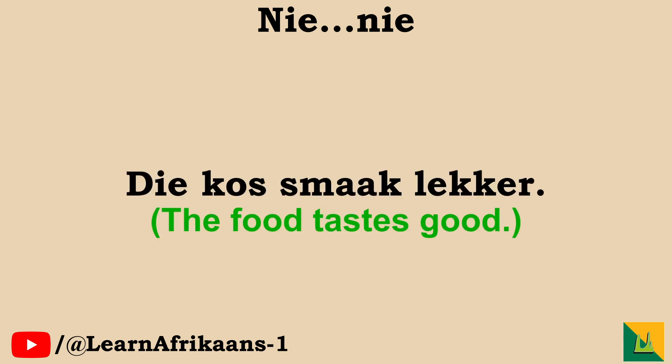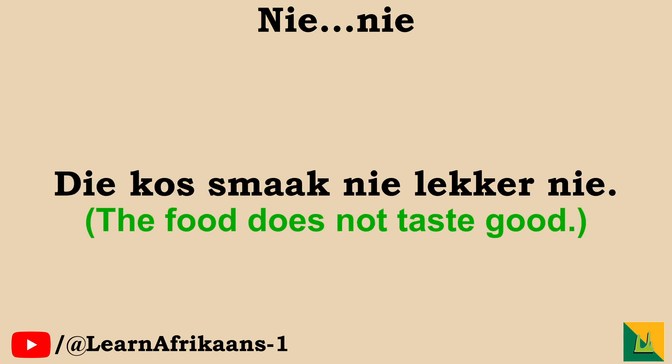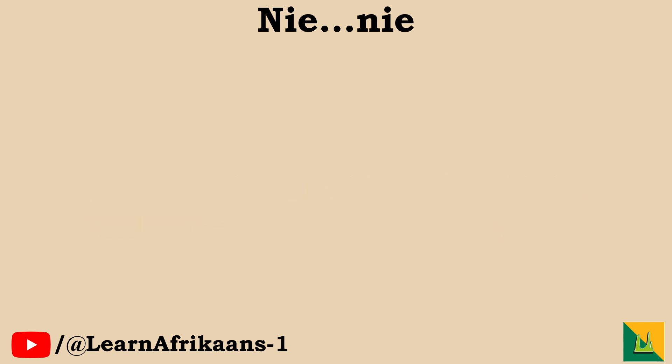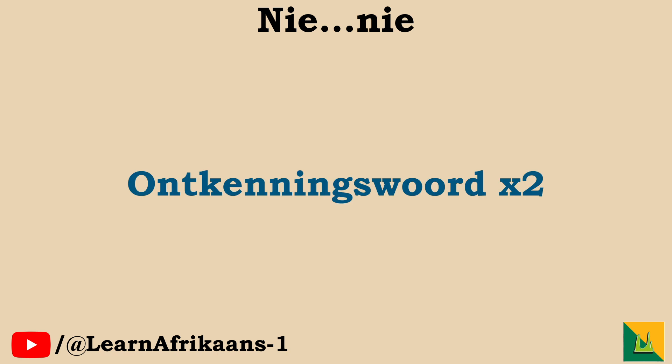Let's look at an example. Die kos smaak lekker. This changes to: Die kos smaak nie lekker nie. As you might have noticed, in the negative form, nie occurs twice. This is the standard in Afrikaans — it is called a double negative. This might take some getting used to, but luckily it is very simple.